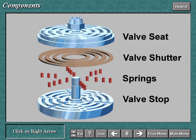The valve stop, or guard, is the part against which the valve shutter stops. It determines the degree of lift that the shutter may have.